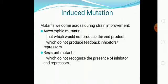The auxotrophic mutant that does not produce the end product — in industrial microbiology terms we call them auxotrophic mutants — are those which do not produce feedback inhibitors or repressors. Because the organism doesn't produce end product E, and E is what performs feedback control on the first enzyme in the pathway, when it is not produced the feedback control system will not happen.